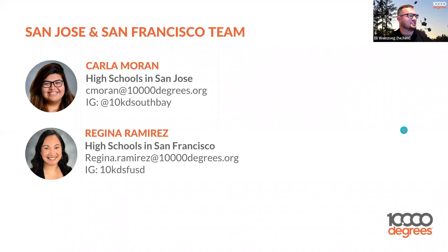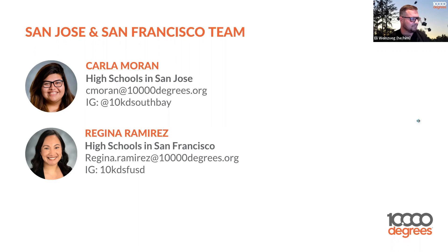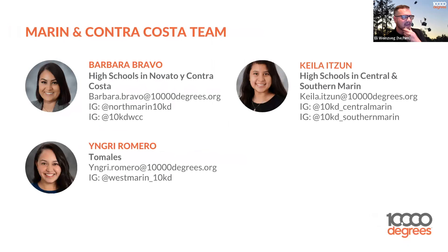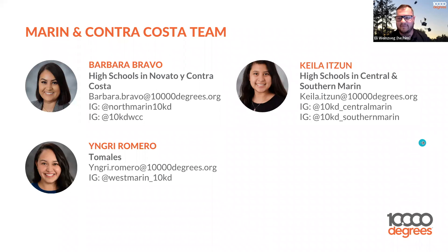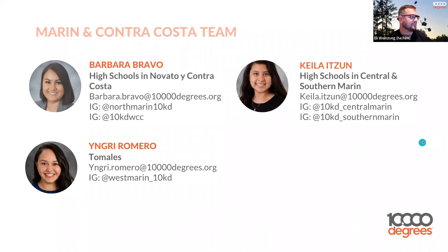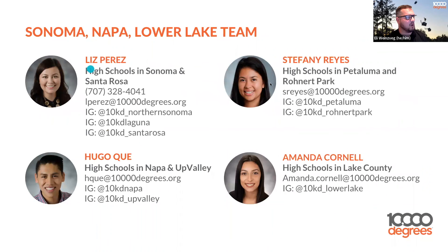We want to introduce you to some of the folks you could possibly be working with. In San Jose and San Francisco, we have Carla Moran and Regina Ramirez. In Marin and Contra Costa, we have Barbara Bravo, Kayla Itzun, and Ingrid Romero. You can always go to our website to find these folks with their contact information and reach out if you live in their area. The Sonoma, Napa, and Lake County team includes Liz Perez, Stephanie Reyes, Hugo Kay, and Amanda Cornell.